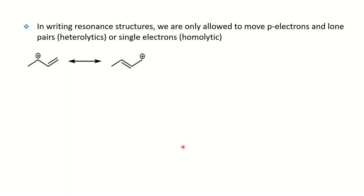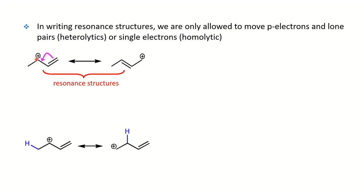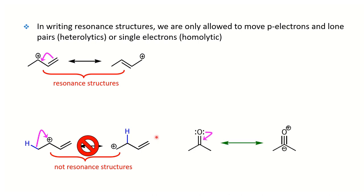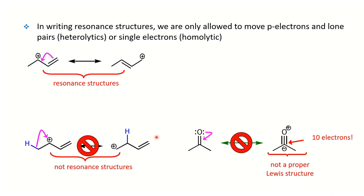Remind yourself that resonance involves no change in the skeletal structure — just movement of lone pairs and pi electrons. In this case, we have a cation and we move a lone pair into that space; the three carbons involved are those with pi orbitals perpendicular to the plane of the molecule. On the other hand, something that looks like a hydride shift is not a resonance structure because sigma bonds are moved. Another invalid structure results in a 10-electron pentavalent carbon, which is not acceptable.